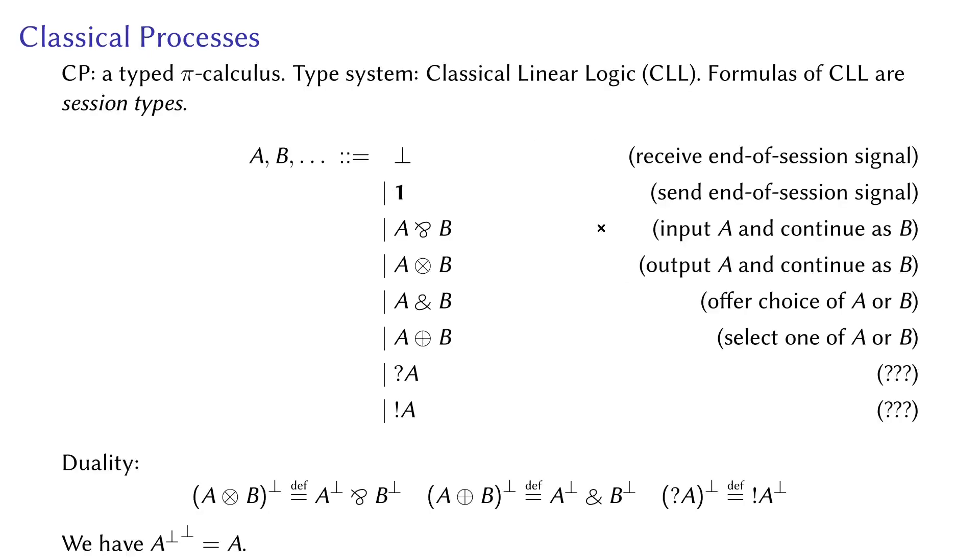First, let's look at Wadler's Classical Processes, or CP in short, that our system is based on. It's a session-typed pi calculus. The types are formulas in CLL, and programs correspond to proofs in CLL, just as one would expect. We have the multiplicative fragment, including sending and receiving end-of-session signals and channels. We also have the additive fragment, including making and accepting choices. We also have the exponential fragment, including the question mark and the bang, which we will dive into later.